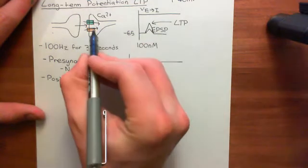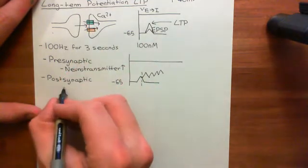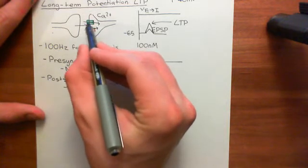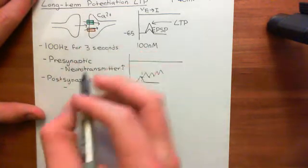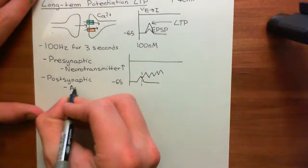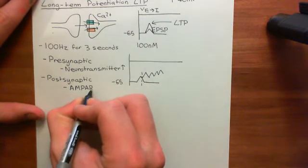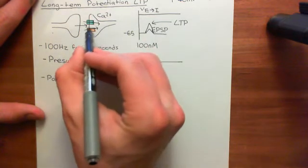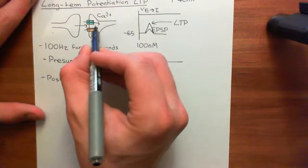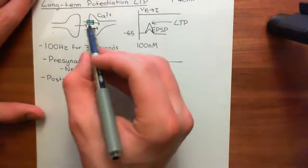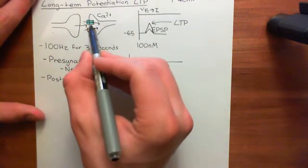So we're going to make changes to the postsynaptic cell. What we could do is increase the number of glutamate receptors — for instance, we could increase the number of AMPA receptors. If we increase the number of AMPA receptors, then we would increase the amount of excitatory postsynaptic current coming into the cytoplasm of the postsynaptic cell for a certain amount of neurotransmitter released.